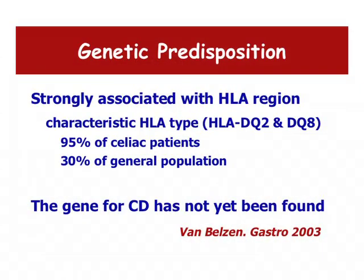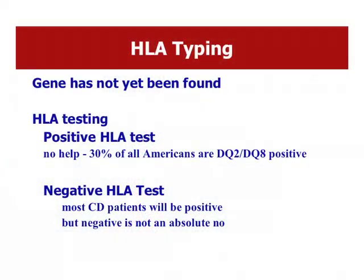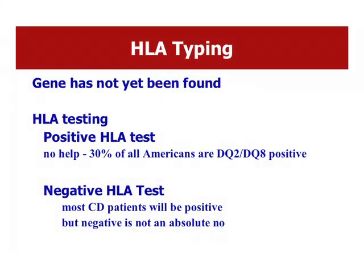As of 2010, we have not identified the specific gene for celiac disease, so we can't send off a blood test to tell you whether you have that gene. The best we can do is look at HLA markers. If you're positive for the HLA markers associated with celiac disease, you're in good company — about thirty percent of the U.S. population has those markers, so a positive result isn't particularly helpful. What's more useful is knowing if someone is negative, though unfortunately a few patients with celiac disease test negative for those HLA markers.